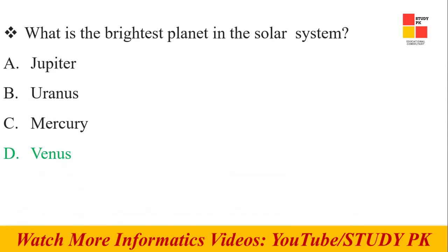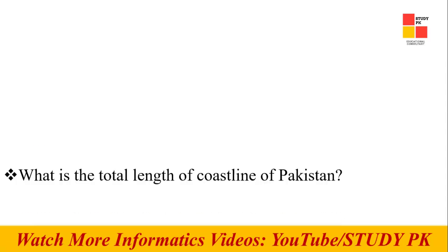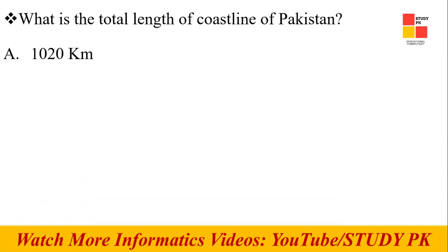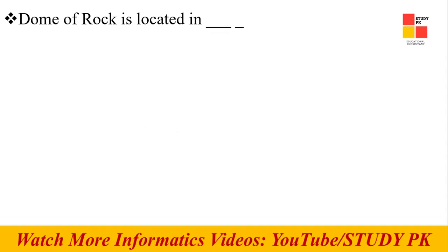Next question: What is the brightest planet in the solar system? Next question: What is the total length of Pakistan's coastline? 1,046 kilometers according to the options.